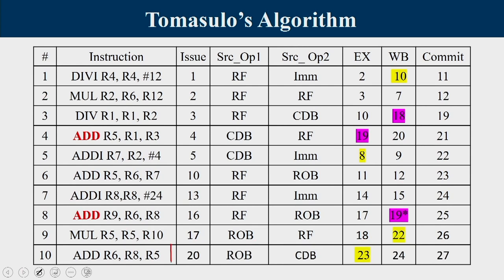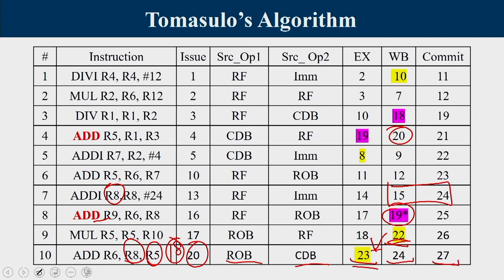The last instruction is an ADD. It tries to issue at cycle 18 but both adder reservation stations are occupied — one until cycle 19 (write-back) and one until cycle 20. So it can only be issued at cycle 20. R8 is in the reorder buffer (produced at cycle 15, available until commit at 24). R5 is still being processed — result available on CDB at cycle 22. So execution can start at cycle 23, completing at cycle 23, write-back at cycle 24, and commit at cycle 27.